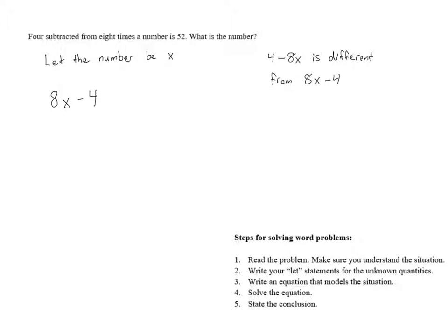Anyways, 4 subtracted from 8 times a number, that's 8x minus 4, is 52. That means we need to set this equal to 52. And now that we have an equation with x in it, we can solve to figure out the value of x.